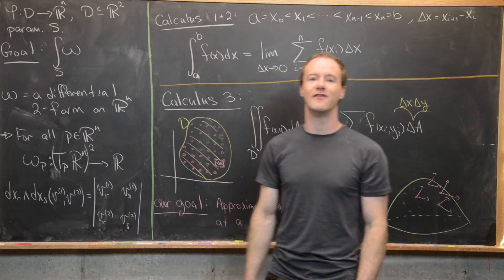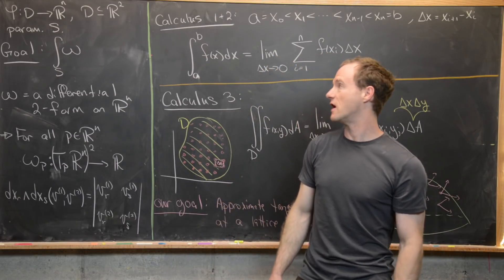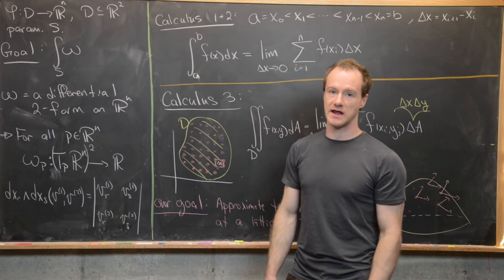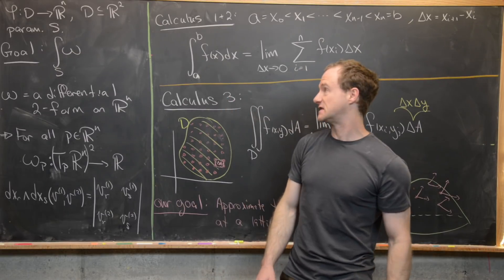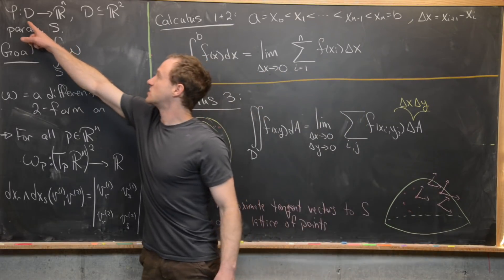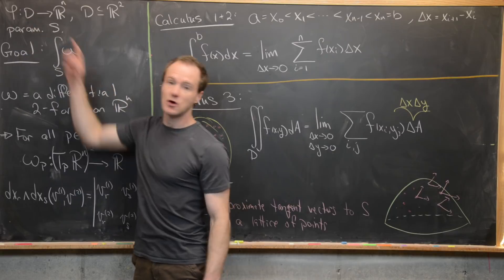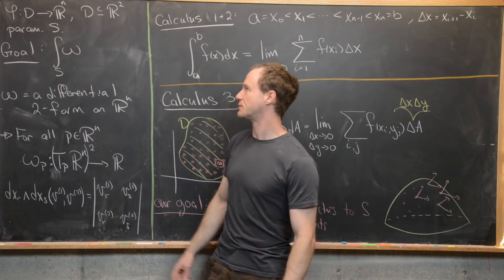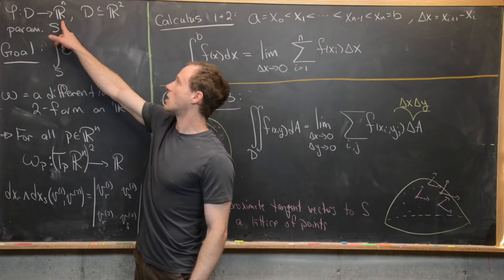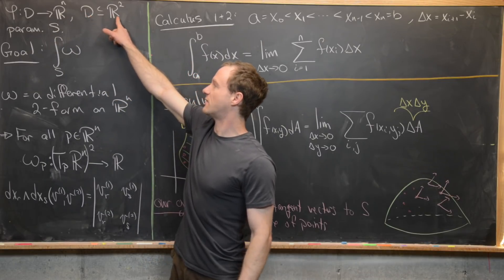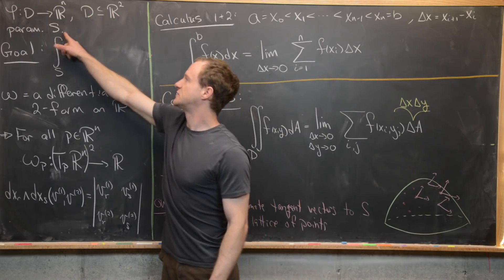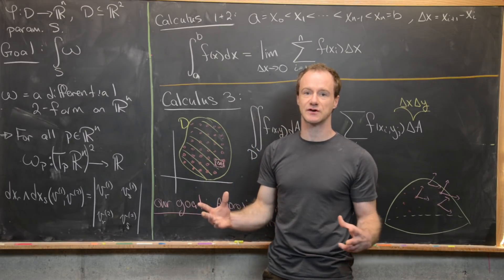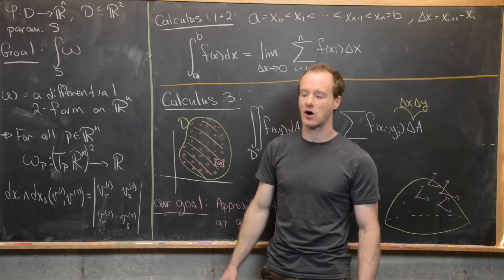In this video we want to look at the notion of an integral of a differential two-form in Rⁿ. We have a function phi, which is a smooth, infinitely differentiable function from D to Rⁿ. D is a subset of R², so we can think about that as parametrizing a two-dimensional surface inside of Rⁿ.